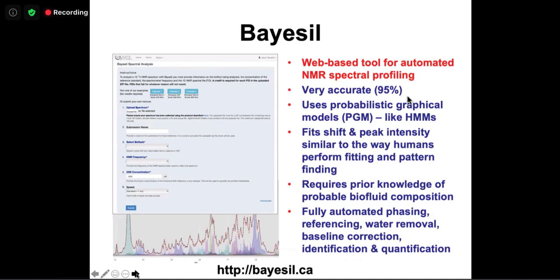The difficulty with BATMAN was that most data processing — baseline correction, referencing, and phasing — had to be done manually, which takes most of the time and varies between users. We decided to develop something fully automated that handles phasing, chemical shift referencing, water removal, baseline correction, component identification, and quantification all at once. That was harder than expected, but it's been running for five or six years and now exists as a web tool called BASIL. It uses something similar to hidden Markov models.